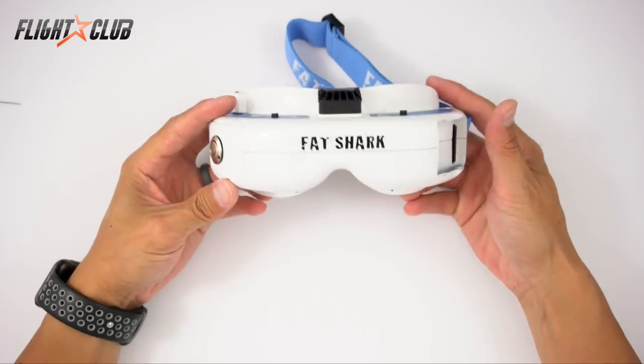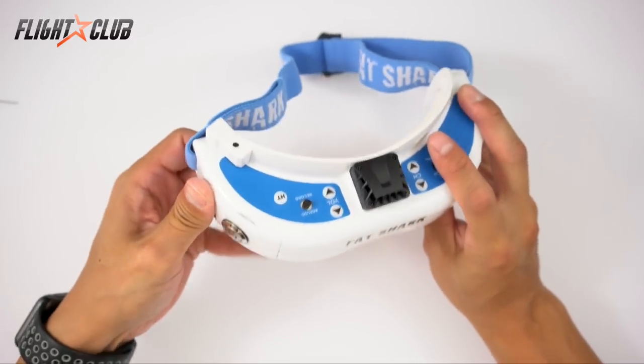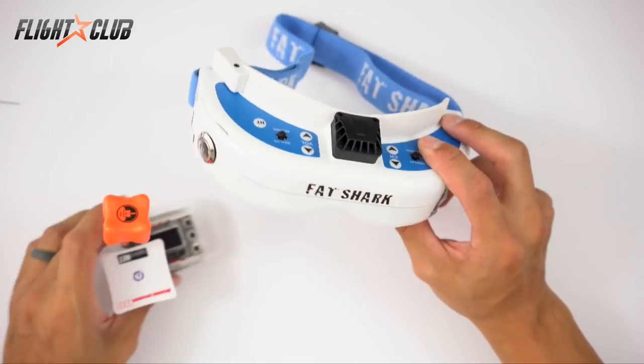Alright, so when you're done, this is what it should look like. Button should sit flush, perfectly in the center. Everything nice and clean, fits perfectly. So we'll just power it up and see what it looks like.